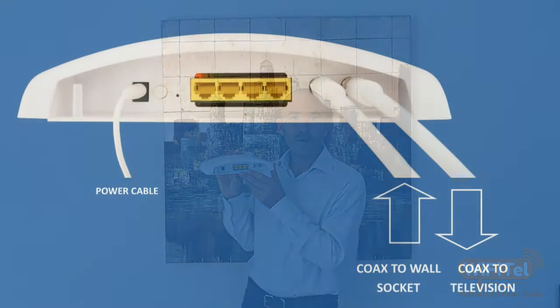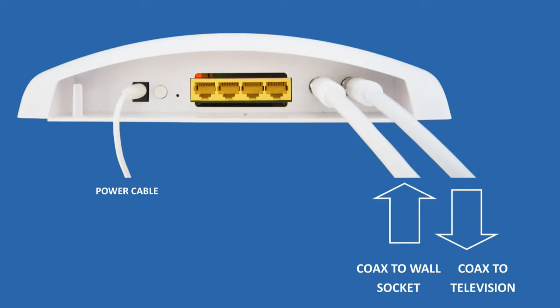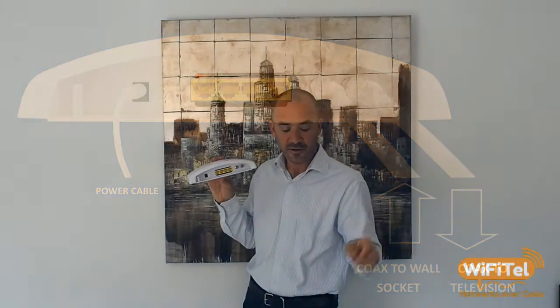The access point connects into the coax system from the room wall jack into the access point — data in — from the access point to the back of the TV — TV signal out. The coax cables are connected with a basic Aptek connector with the coax tighten tool that we provide you.